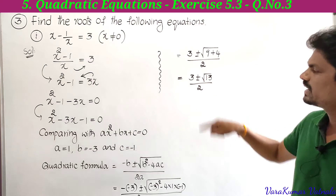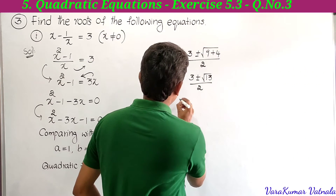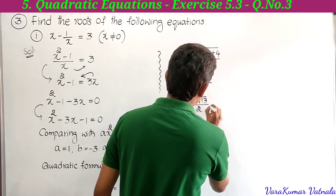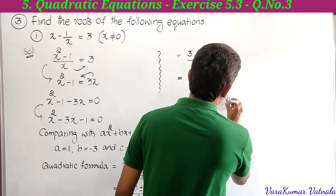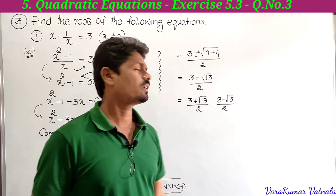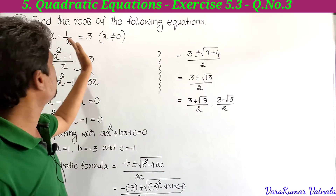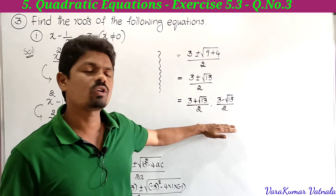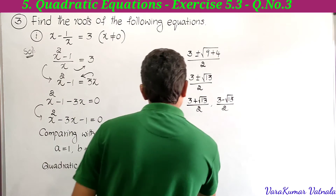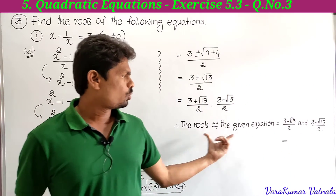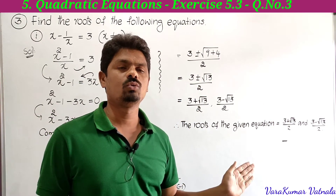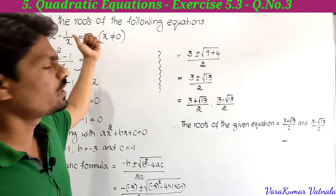Taking plus and minus separately, the two roots of the given quadratic equation are 3 plus square root 13 by 2 and 3 minus square root 13 by 2. This completes the first bit of the third problem.